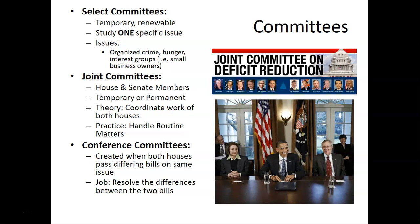Joint committees are made up of members from both the House and Senate together and can be permanent or temporary. In theory, they coordinate work across both houses for greater effectiveness. In practice, due to political and structural differences — especially when each house is controlled by a different party — they mostly handle routine matters. Conference committees are similar but specifically resolve differences between bills on the same issue passed differently by each house.